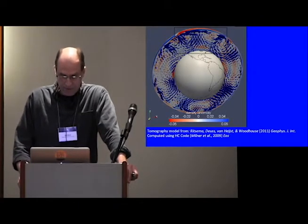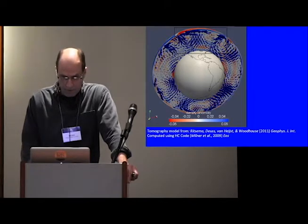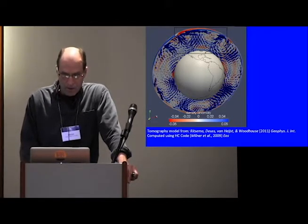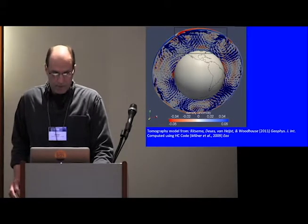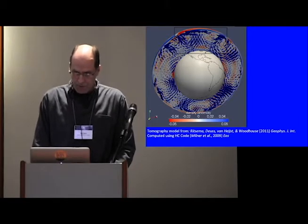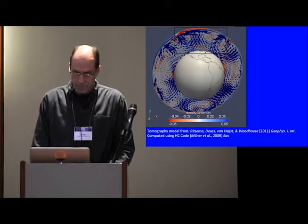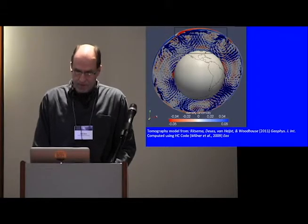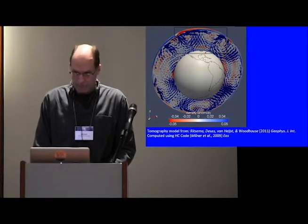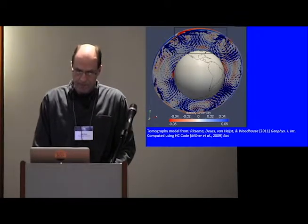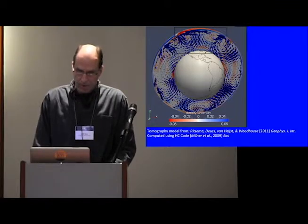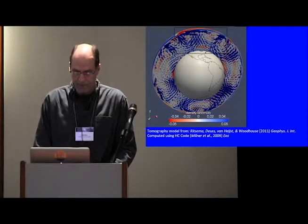An example of that, this is another tomography model from Ritzema et al. This shows the fundamental property of the flow field, the first order flow field I'm going to be talking about today. Beneath eastern North America, the flow vectors in the mantle are moving westward and then down. Beneath western North America, I'm going to talk about this, the flow vectors are moving eastward. This doesn't show the velocity of the upper plate of the lithosphere, but the flow vectors are moving east.